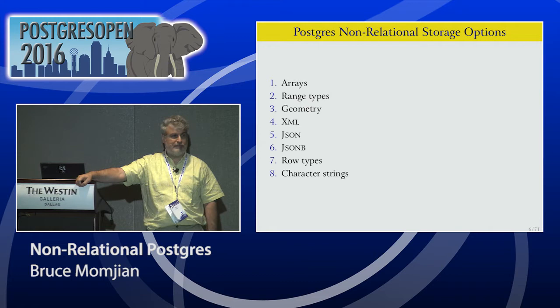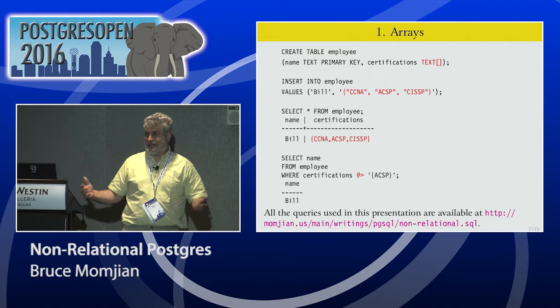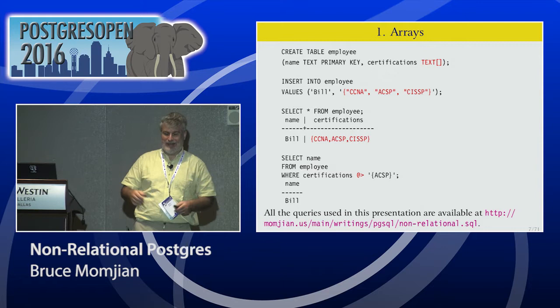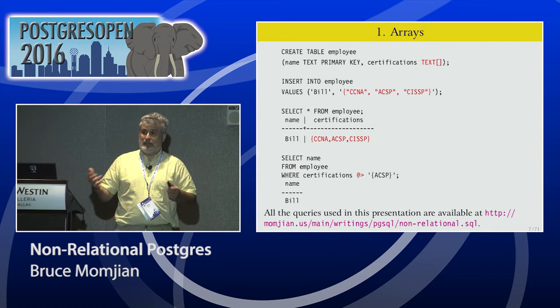Let's start with the first one — an array. Postgres has a built-in array type. Is this relational? No. Did it come from Berkeley? Yes. One of the reasons arrays are not relational is that every column is supposed to contain one piece of data, and by definition, arrays contain multiple values.